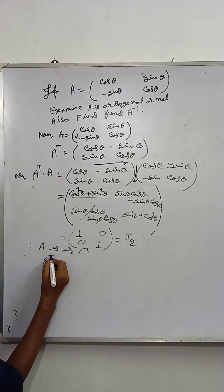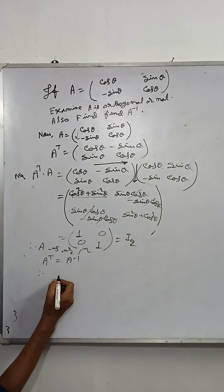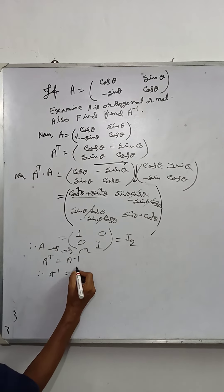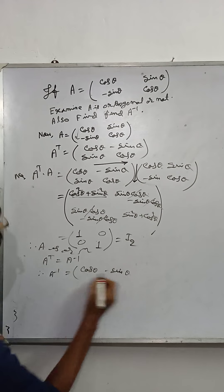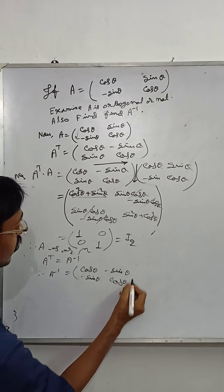A transpose equals A inverse. Therefore, A inverse equals only the transpose: (cos θ, -sin θ; sin θ, cos θ).